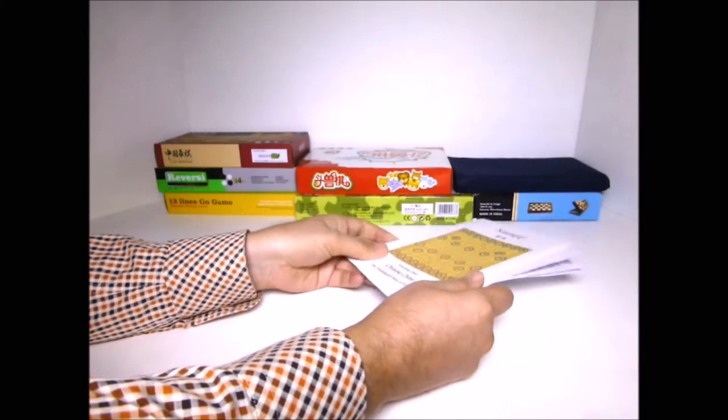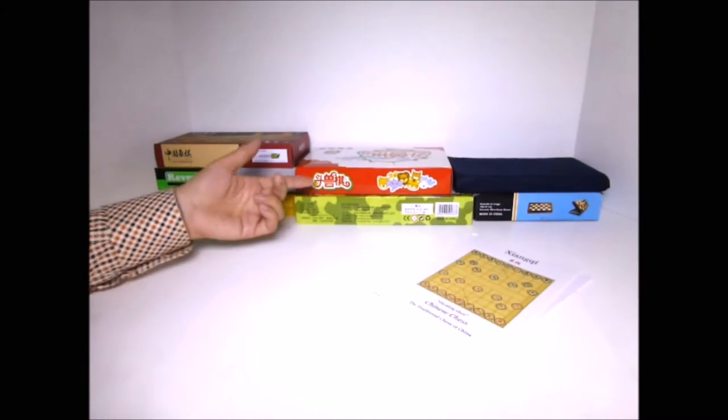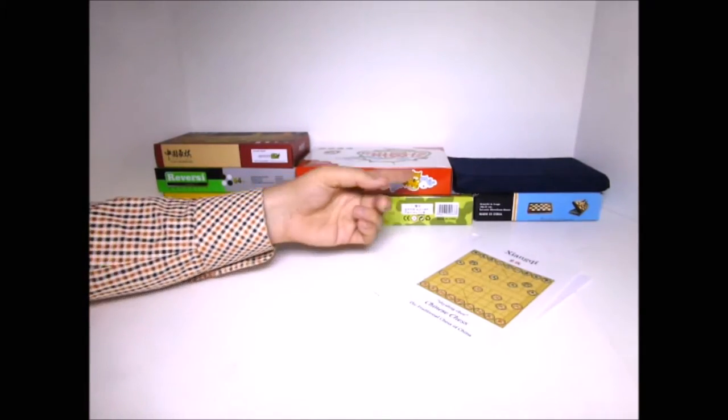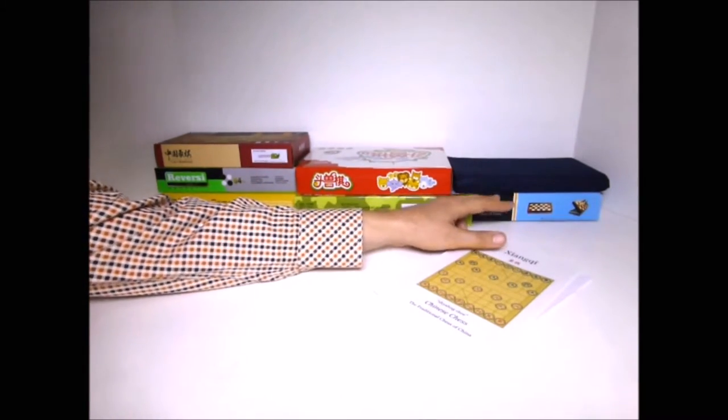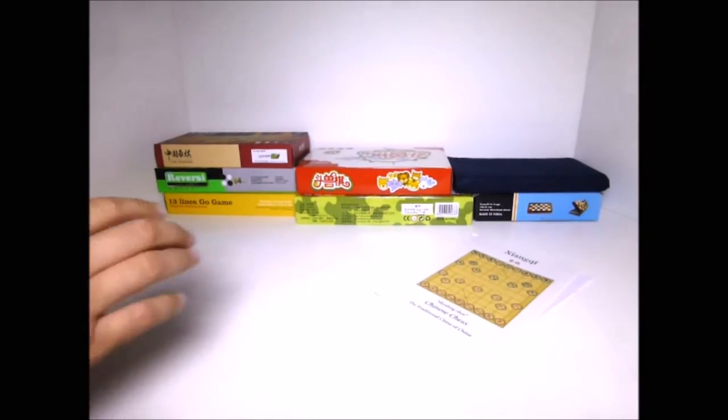I also have some booklets that go with these games. This is the Chinese chess, this is Reversi, a game of Go. I've also got a new Dou Shou Qi set and a new interesting Luzhanqi set. These are a couple old games, the Chinese chess and a regular chess that I've got here. Let me show them to you one at a time.